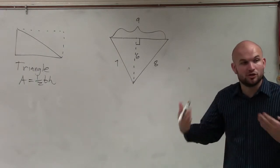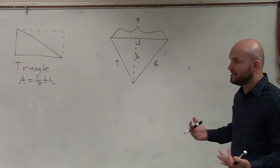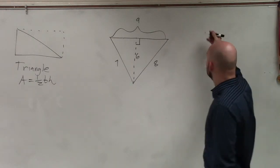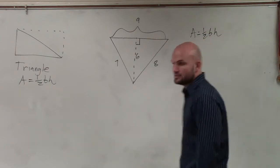So the first thing we want to do is identify the formula. Triangle area equals one half base times height. Correct.